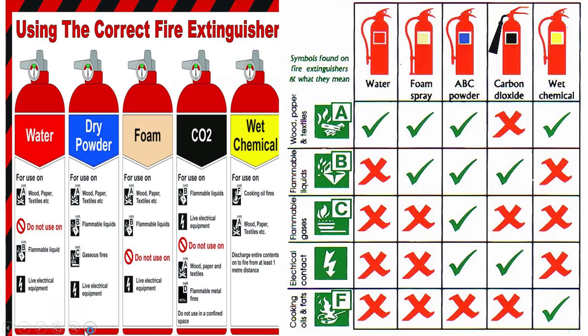Using the correct fire extinguisher is very, very important. For Class A fire, use water. Foam spray can be used for Class A and Class B. ABC powder can be used for Class A, Class B, Class C, and even for electrical fire. For wet chemical, you can use it for Class A fire and kitchen fire.